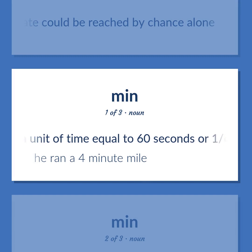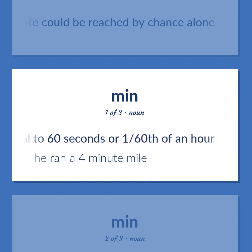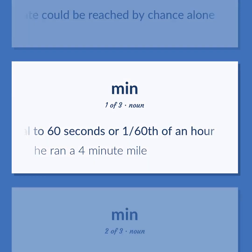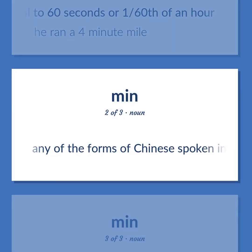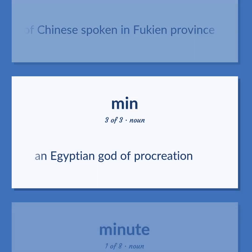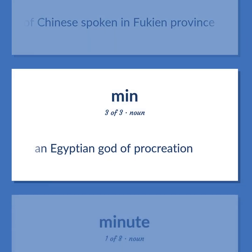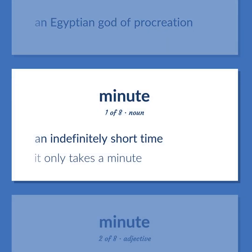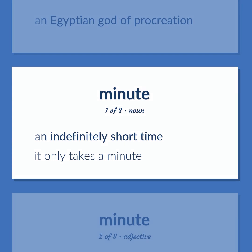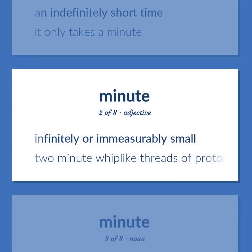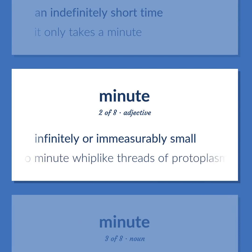A unit of time equal to 60 seconds or 1/60th of an hour — "he ran a 4-minute mile." Any of the forms of Chinese spoken in Fujian province. An Egyptian god of procreation. An indefinitely short time — "it only takes a minute." Infinitely or immeasurably small — "two minute whip-like threads of protoplasm."